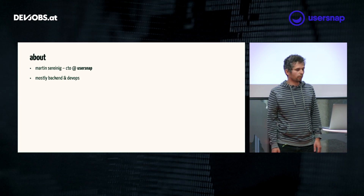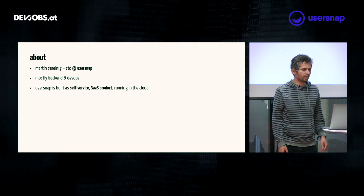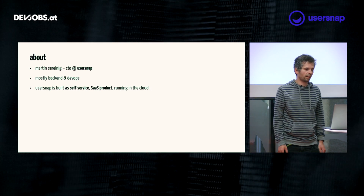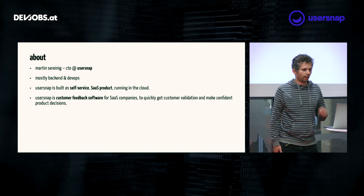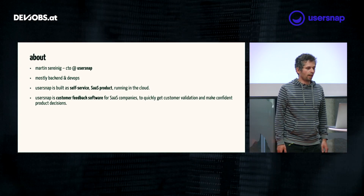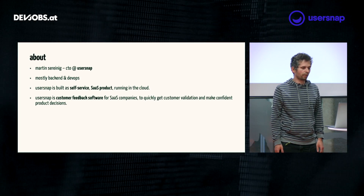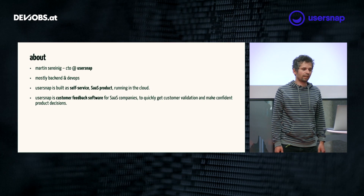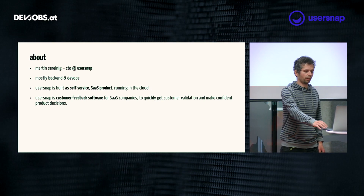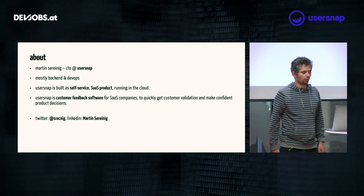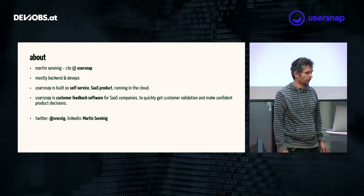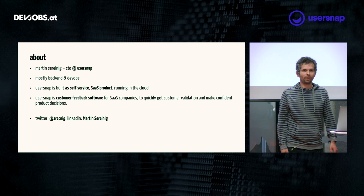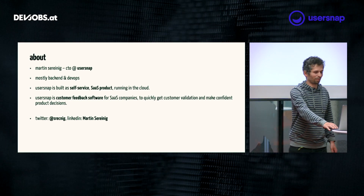I do mostly backend and DevOps work. UserSnap itself is built as a self-service SaaS product running in the AWS cloud. We build customer feedback software for other SaaS companies to quickly get customer validation and make confident product decisions. If you like what you heard today, you can follow me on Twitter or connect on LinkedIn — we're always hiring, so just contact me.